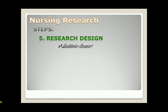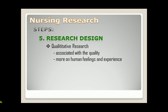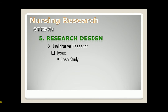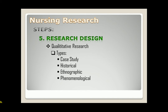Second design is qualitative research. It is associated with quality — more on human feelings and experience. It has an emic perspective, which focuses on the respondents, then the data collection. Types of qualitative research: case study — an in-depth study of a person, group, or institution. Second, historical — collection of data from the past. Third, ethnographic — collection of data about a cultural group. Fourth, phenomenological — the study of feelings and lived experiences of the people involved. Lastly, grounded theory — involves data collection and analysis to derive theory.